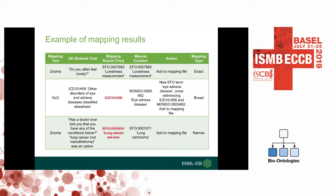Here's an example of our mapping results. The first row shows an exact mapping from Zooma for 'do you often feel lonely' to 'loneliness measurement', retained after manual curation. Second, an ICD-10 code for other disorders of eye and adnexa — OXO mapped it to itself, so during manual curation we rejected this and mapped to a Mondo term instead, creating a new term cross-referencing ICD-10 and Mondo as a broad mapping. Third, a self-reported trait asking whether a doctor told the participant they have lung cancer — Zooma incorrectly mapped this to 'lung cancer cell line', so during curation we mapped it to 'lung carcinoma', a narrow mapping that highlighted EFO's cancer branch requires significant further development.